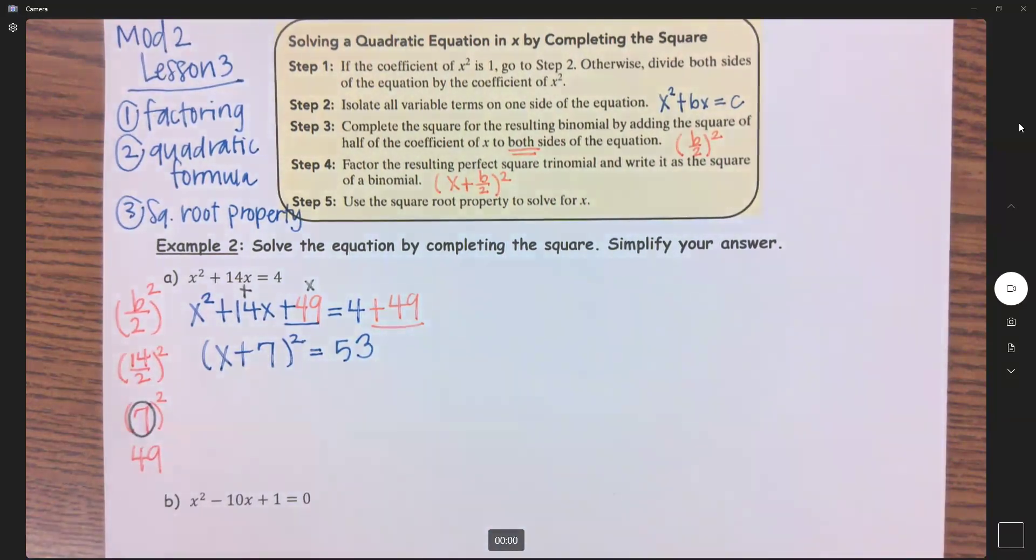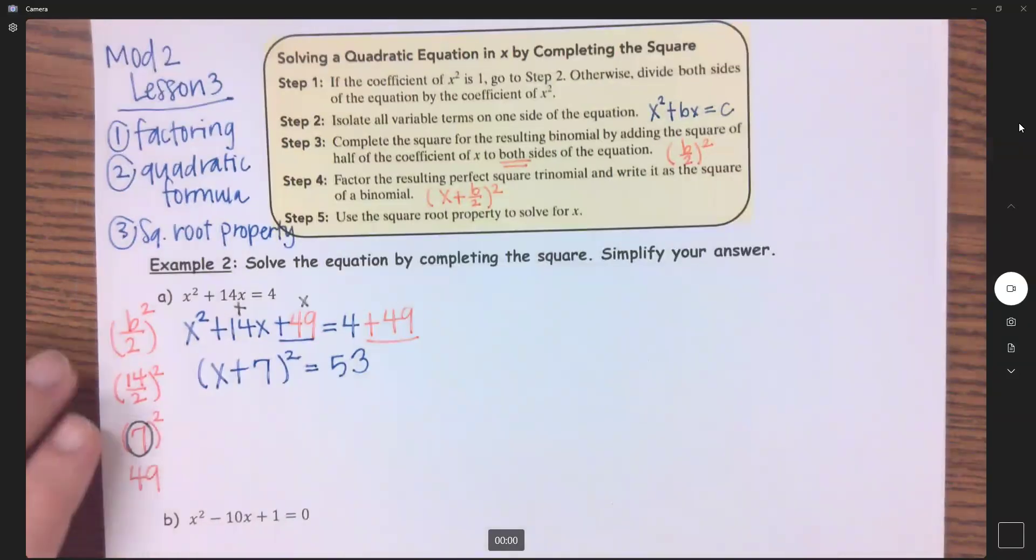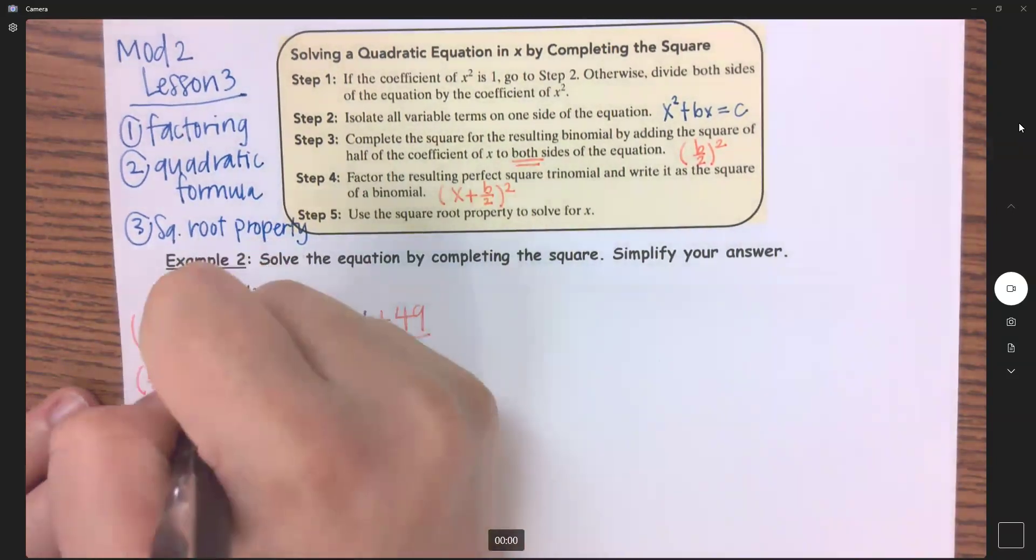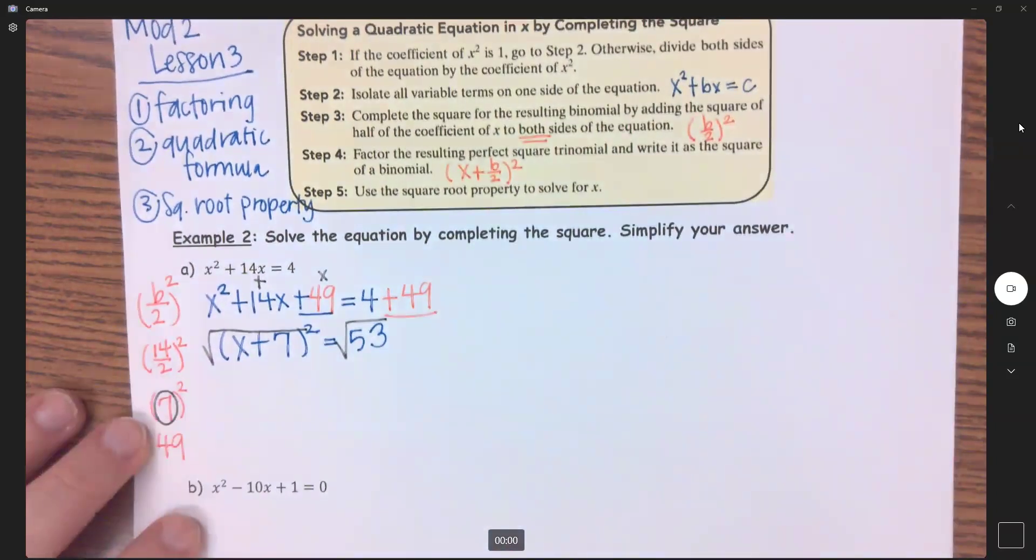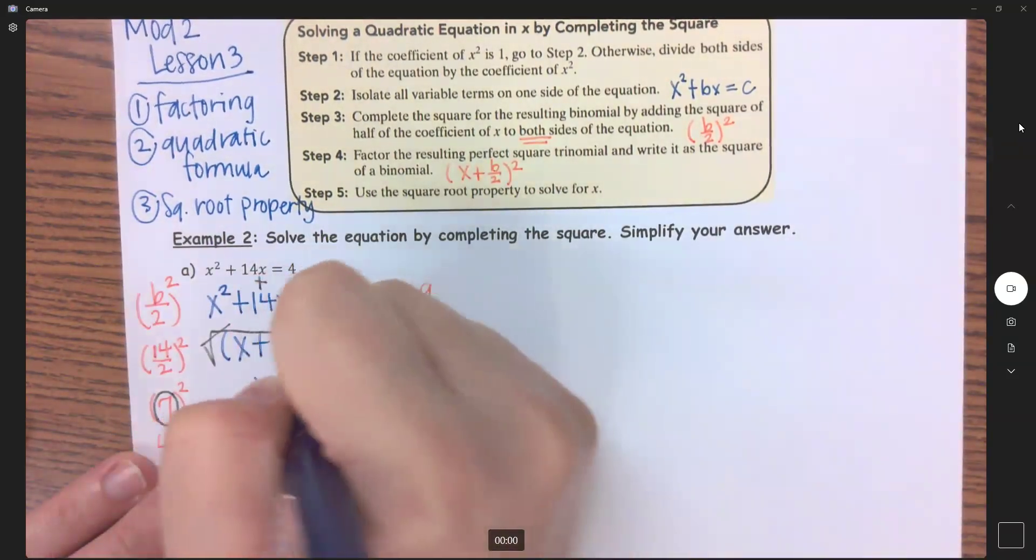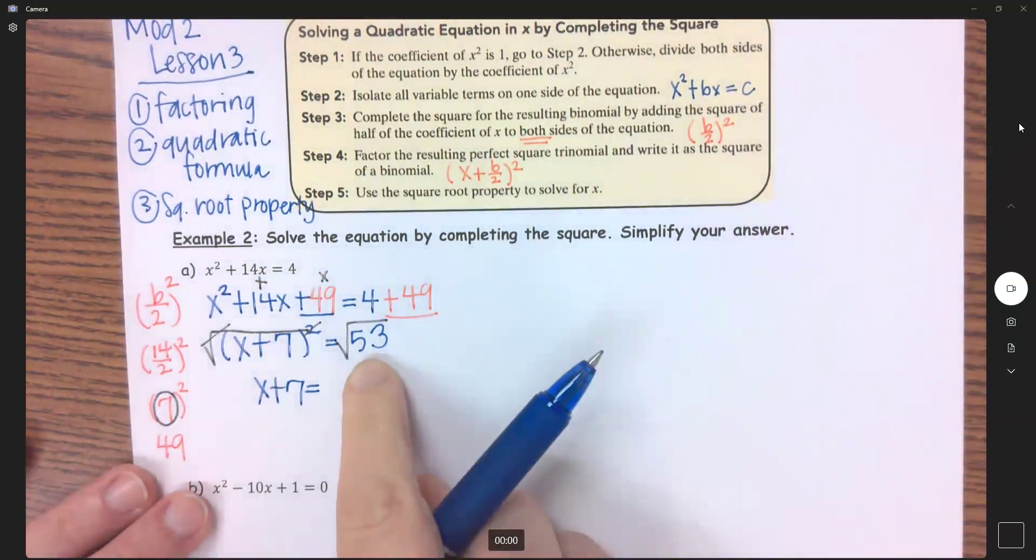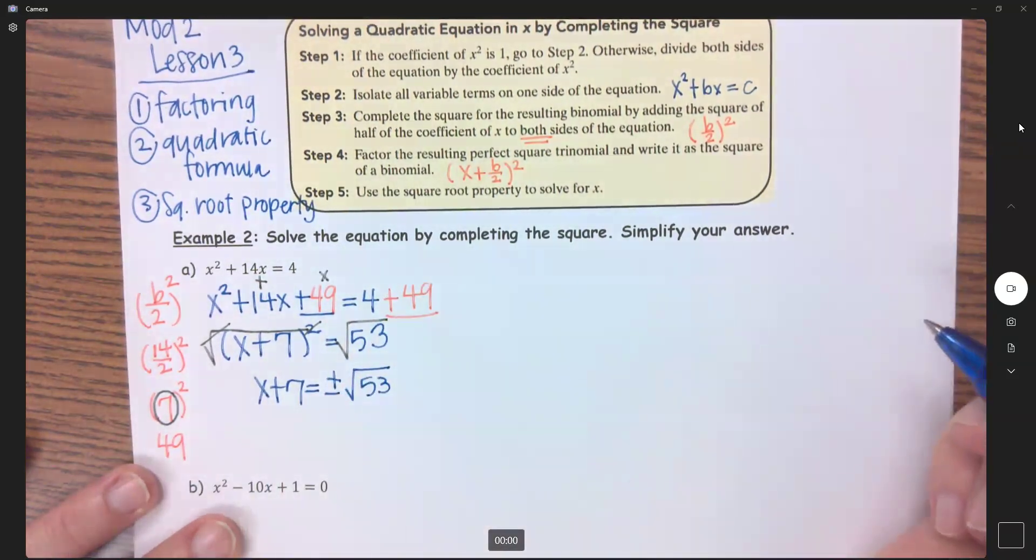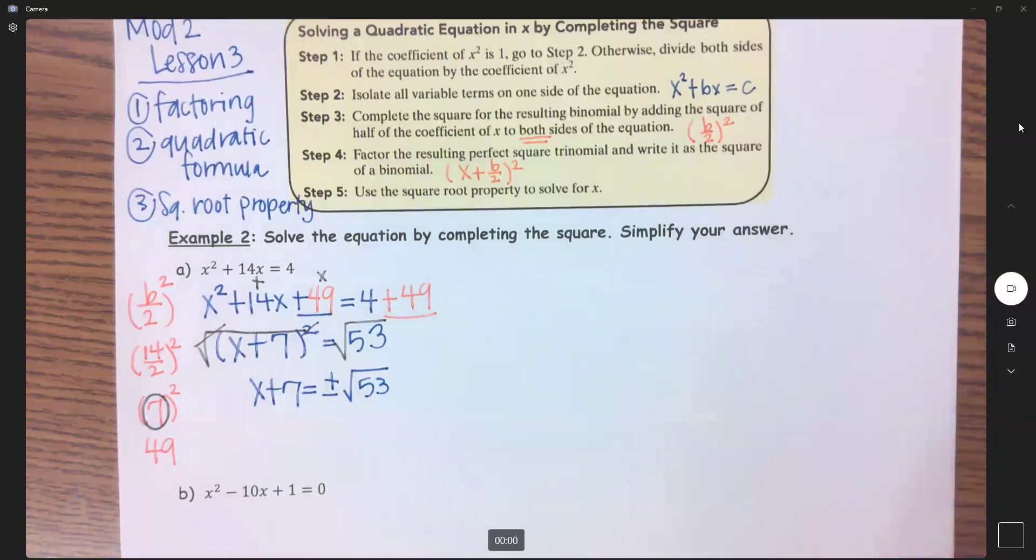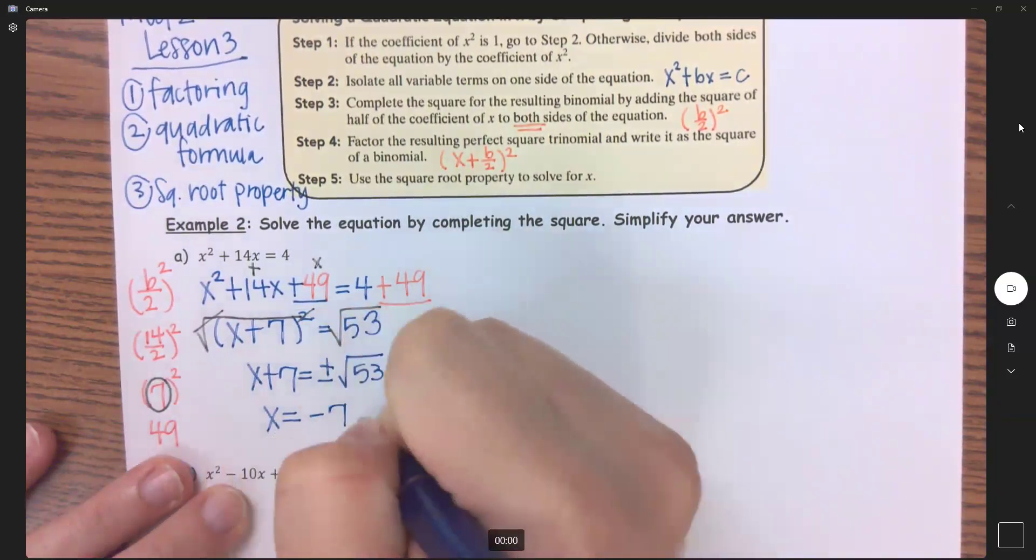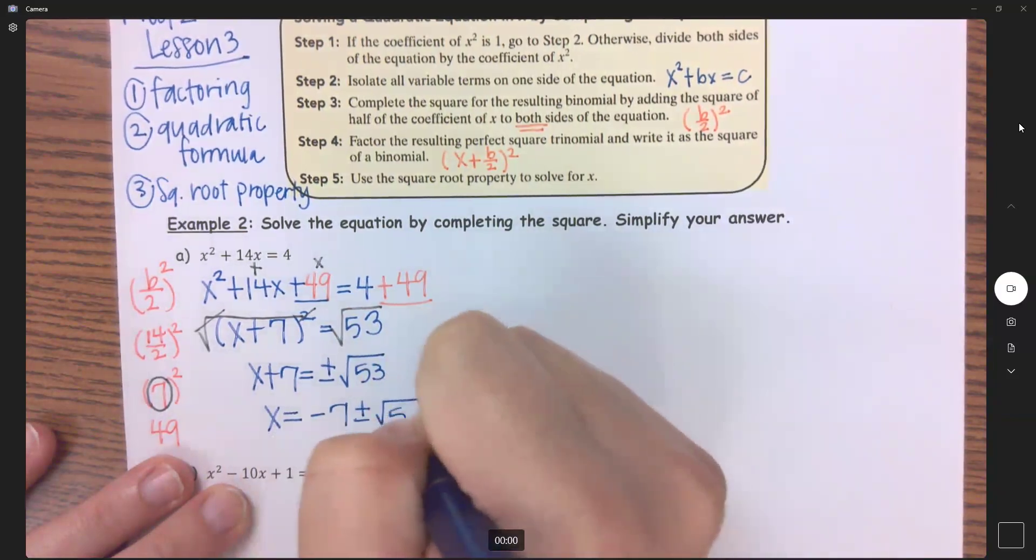Now we almost have an identical equation, and now I can apply that square root property. The opposite of squaring would be to take the square root. So my square root and square cancel right there, and I am left with x + 7 = I can't do anything with that, so that will just become ±√53. That's a prime number. And then my last step would be to subtract the 7 over. So I get x = -7 ± √53.